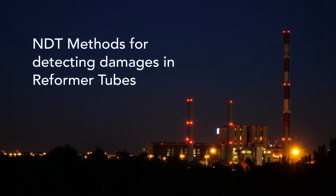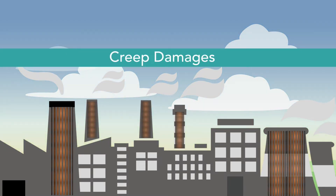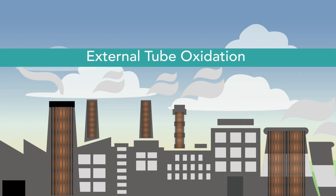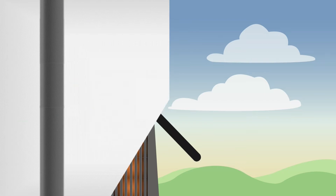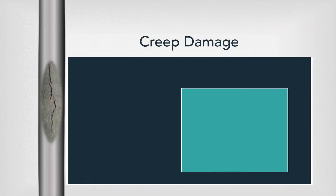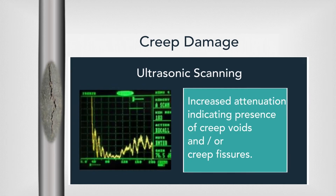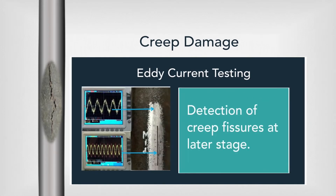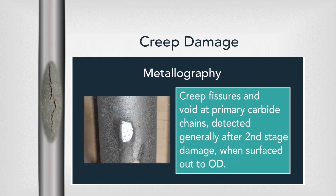NDT methods for detecting damages in reformer tubes: creep damage can be detected through diametric measurements, ultrasonic scanning, eddy current testing, metallography, and radiography.